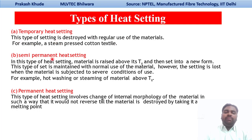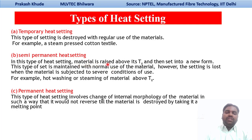The second type is semi-permanent heat setting. In this type, the material is raised above its Tg — that is, the glass transition temperature — and then set into a new form. This type of setting is maintained with normal use of the material. However, the setting is lost when the material is subjected to severe conditions of use, since the material needs to be taken above Tg. It has much more stability compared to temporary heat set material.